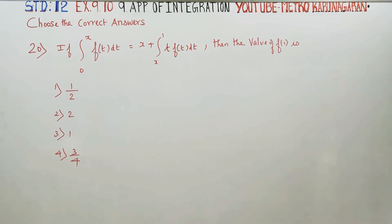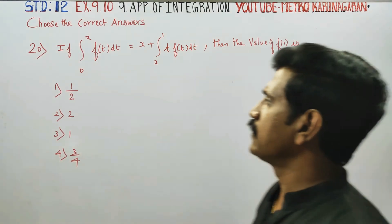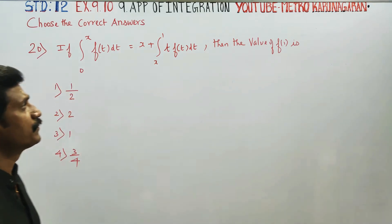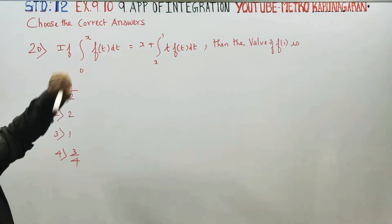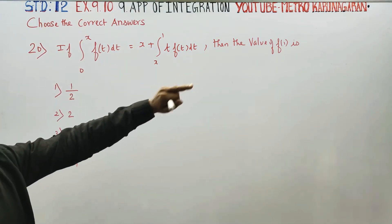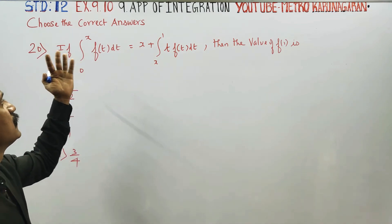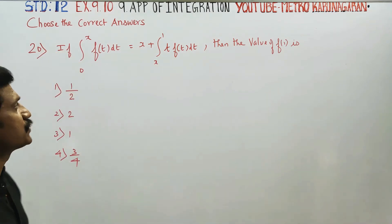Dear 12 standard students, I am Metro Karanagaran. In sum number 20, x is 9.10. You have to find the value of f of 1. It is given that this integral is equal to this expression.